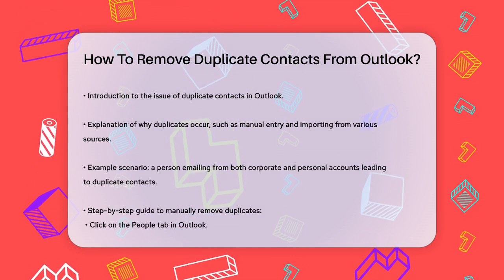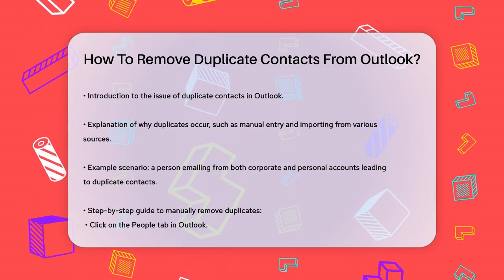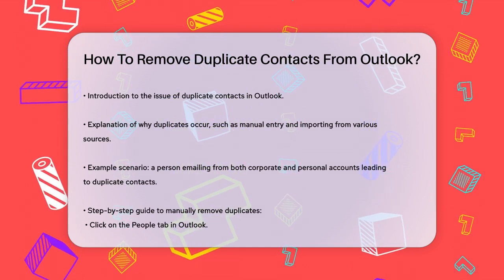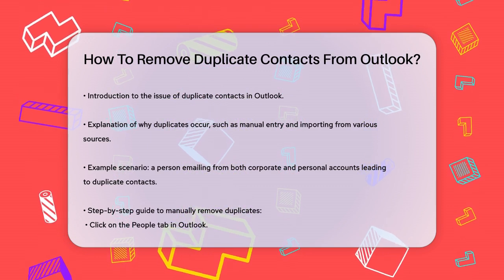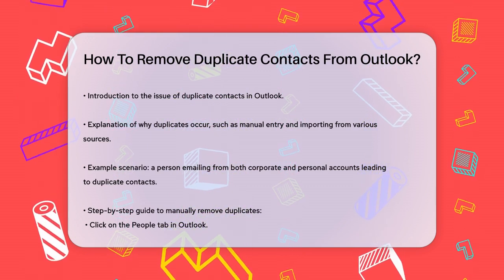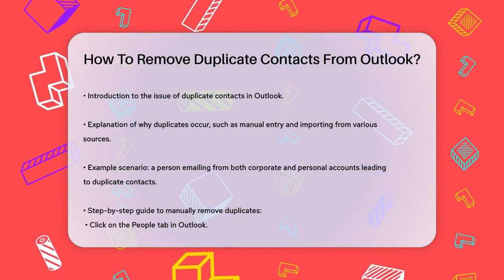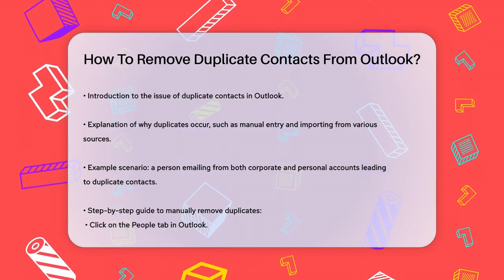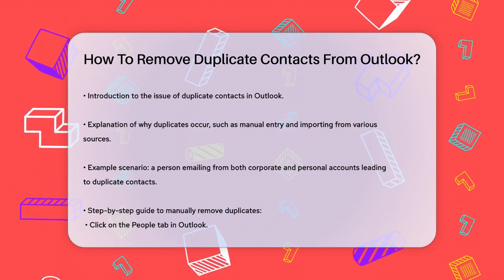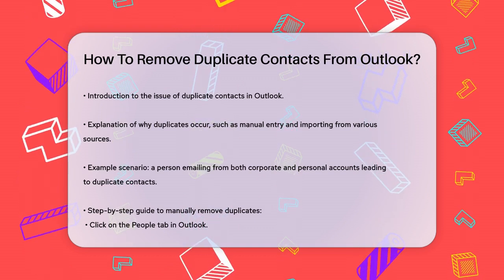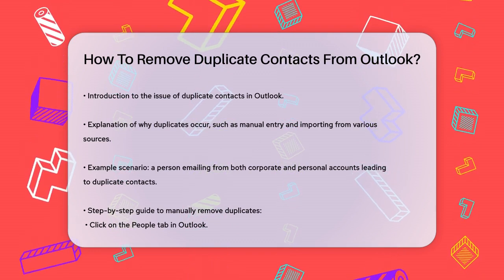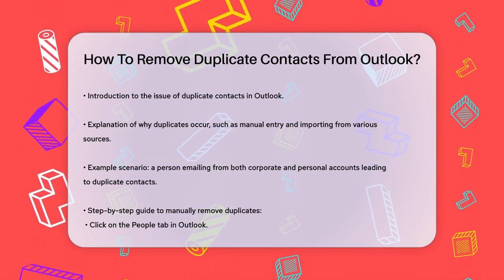First, let's talk about why duplicates happen. Sometimes you might create contacts manually or import them from different sources, leading to misspelled names or different entries for the same person. For instance, if someone emails you from both their corporate and personal email accounts, Outlook might create separate contacts for each email address.